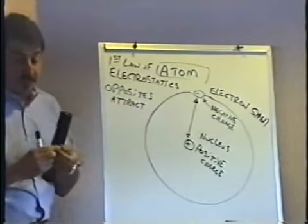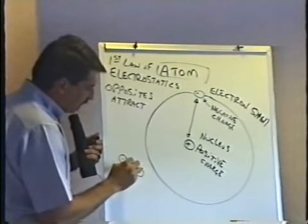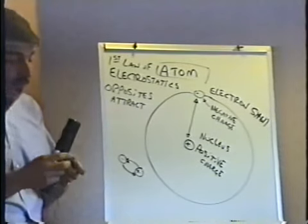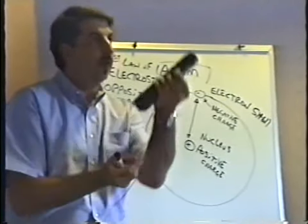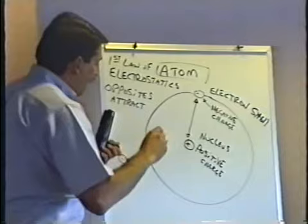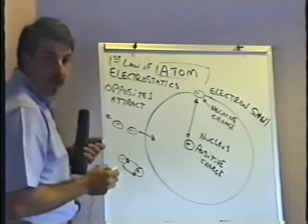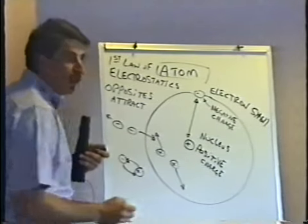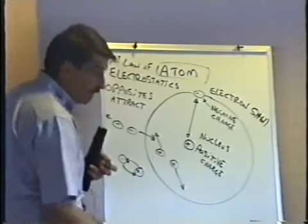Opposites attract, just like opposite magnet poles attract. If I put a negatively charged electron next to something positively charged, they attract each other. Just the opposite is also true — if I try to put two of the same pole together, they repel. Same with electricity: two negative charges next to each other will repel, and two positive charges will also repel. We'll talk more about this throughout the class.